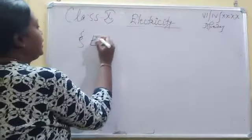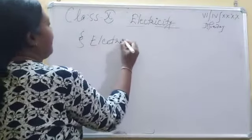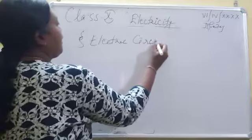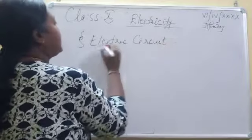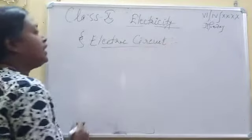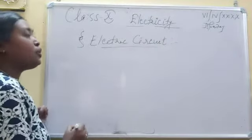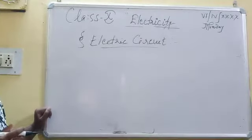Next is electric circuit. What is electric circuit? Electric circuit is the closed path of the flow of the charges.